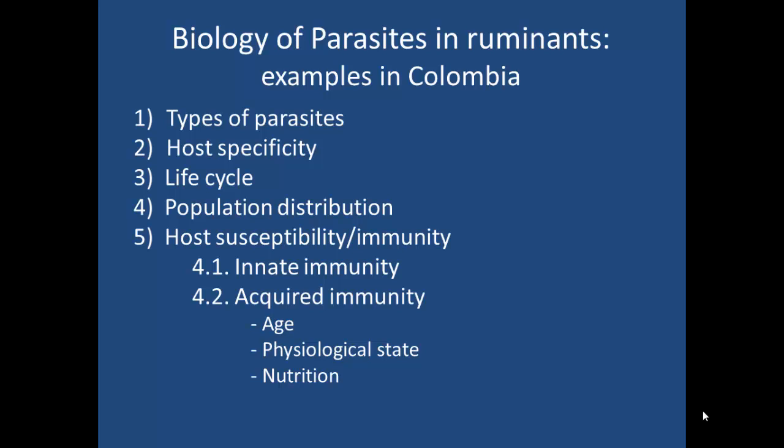On this slide we have five points that we'll discuss: the different types of parasites, why their specificity to the host becomes important, something about their life cycle that we can use to intervene wherever they happen to be most vulnerable, the population distribution of parasites in a production system, and finally the fantastic defense immune system of the animal.